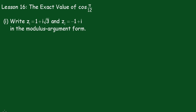Lesson 16. We're going to find the exact value of cos of π/12 using complex numbers. First, in part 1, we have to write z1 equal to 1 plus i root 3, and z2 equals minus 1 plus i, in the modulus-argument form. Pause the video and see if you can do this yourself.